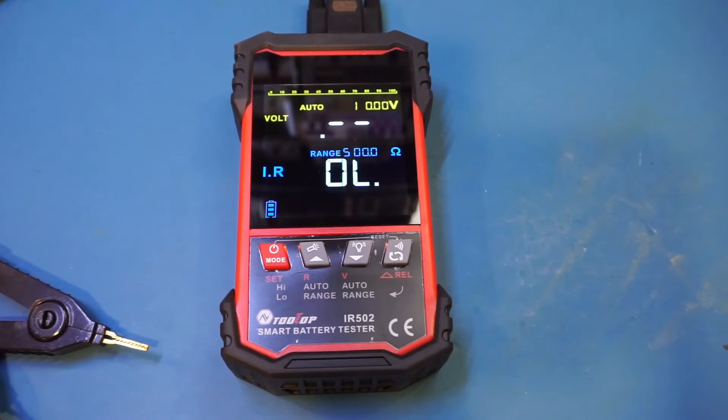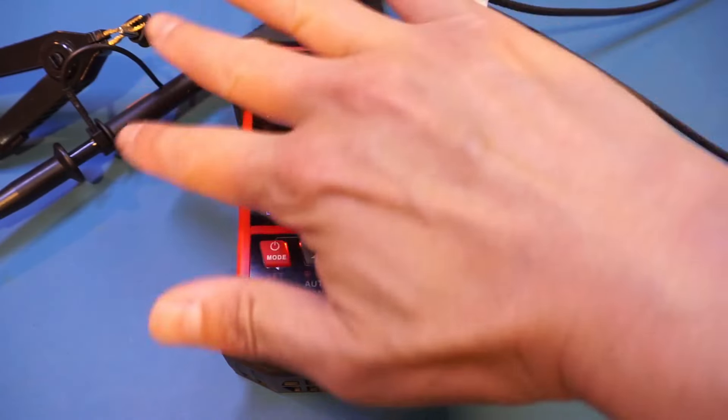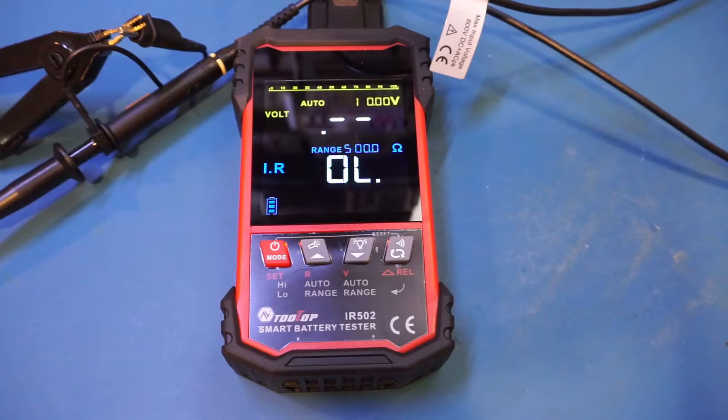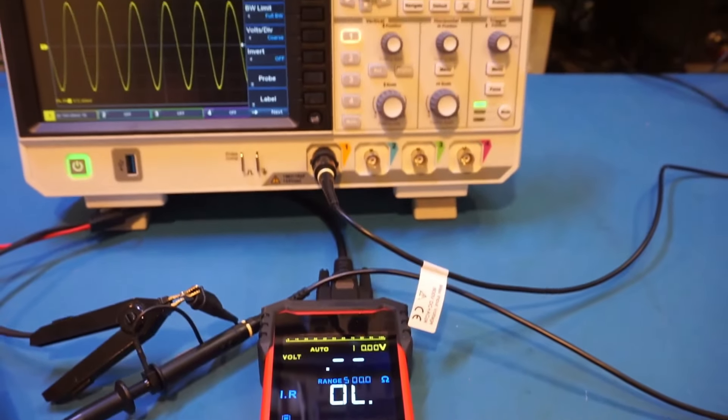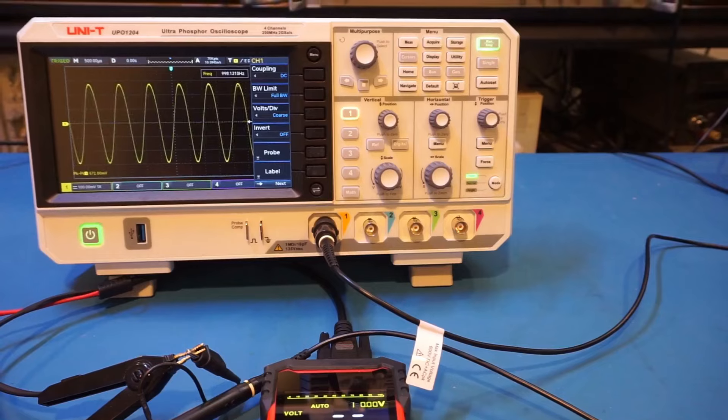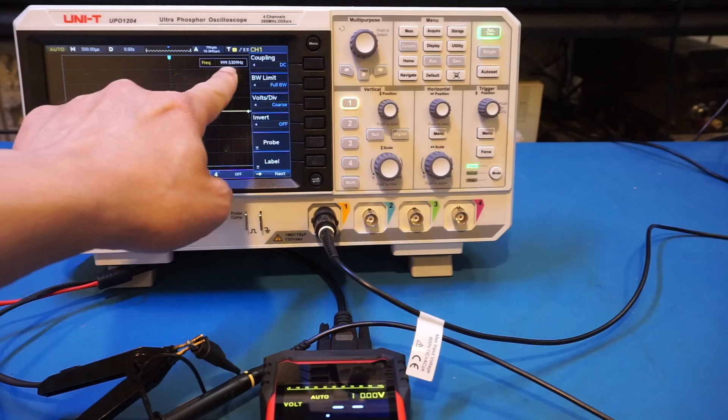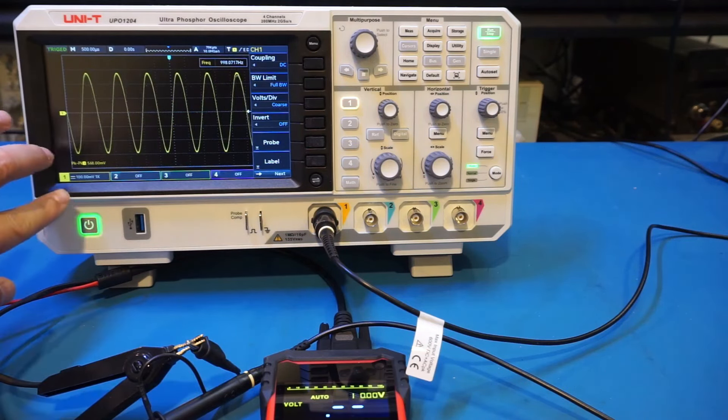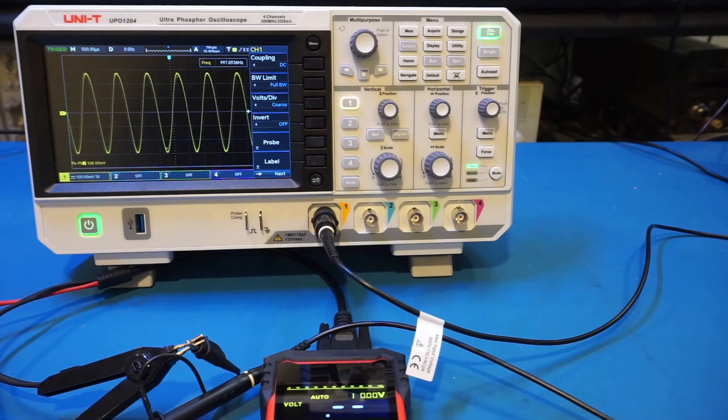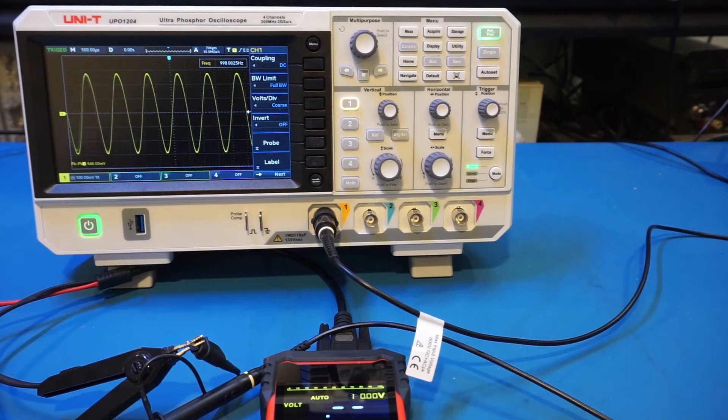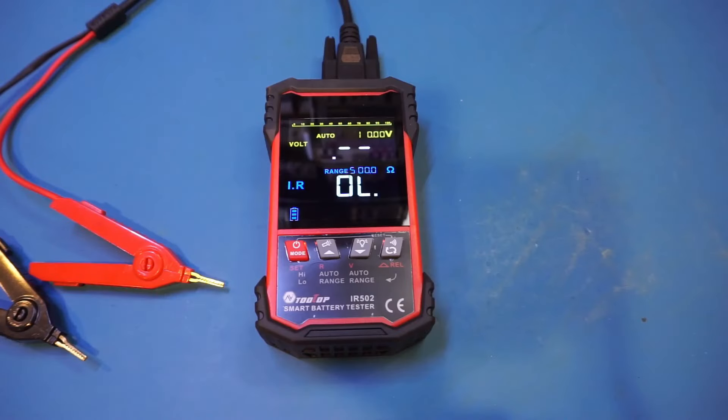Now before I test out batteries, let me actually take a look at the waveforms. As I suspected earlier, this battery tester uses an AC signal to perform the testing. I have hooked up the output to an oscilloscope. As you can see, we're indeed getting a sinusoid from the output at roughly one kilohertz, and the peak to peak value is roughly just over half a volt. You can see that the output is paused once in a while. All right, let's take a look at a few batteries.